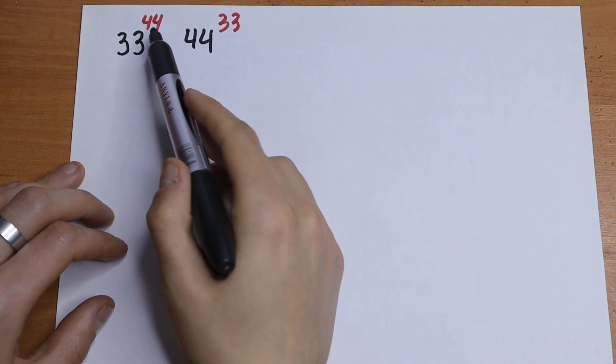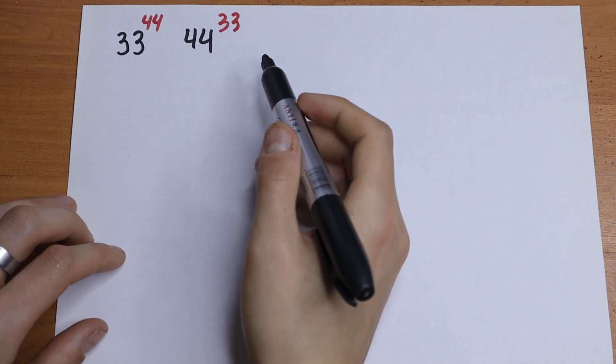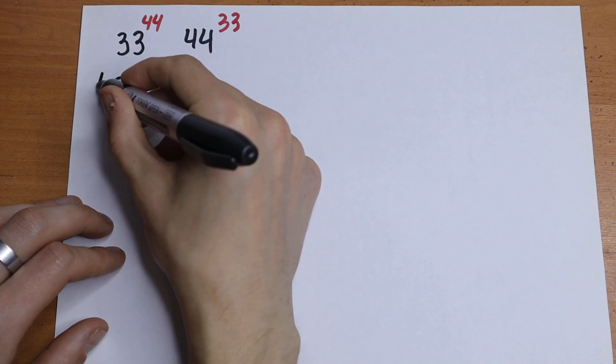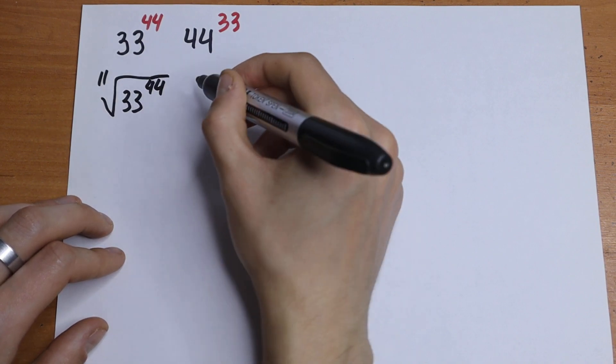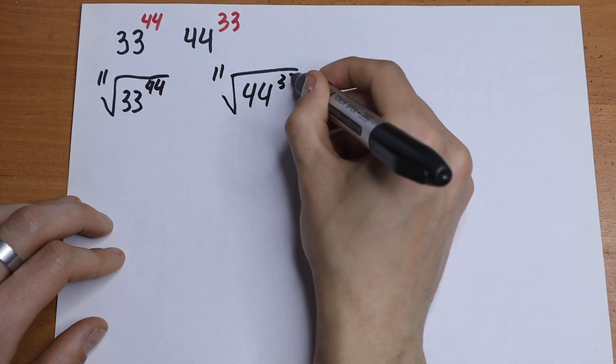I think that this 44 and this 33 we can divide by 11. So we can take the 11th root from both of the sides. Take the 11th root from 33 to the 44th power and take the 11th root from 44 to the 33rd power.